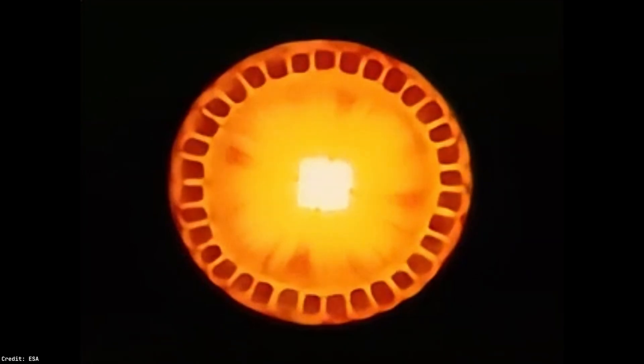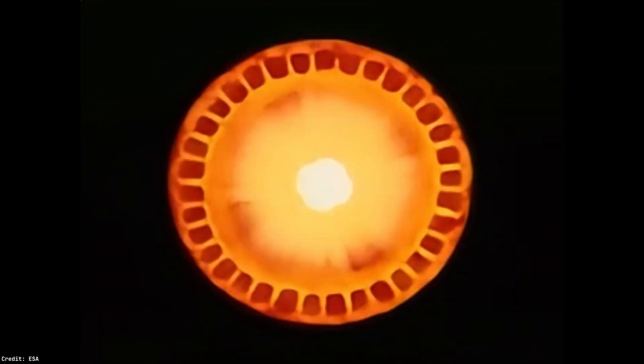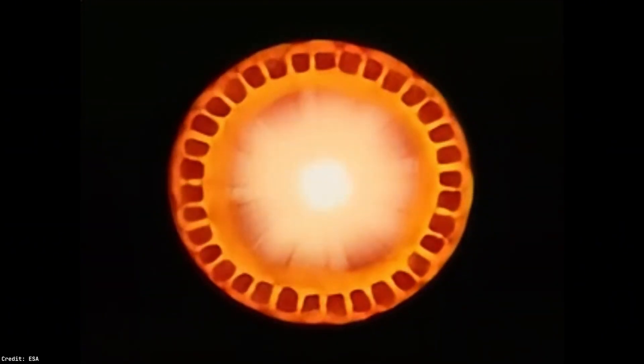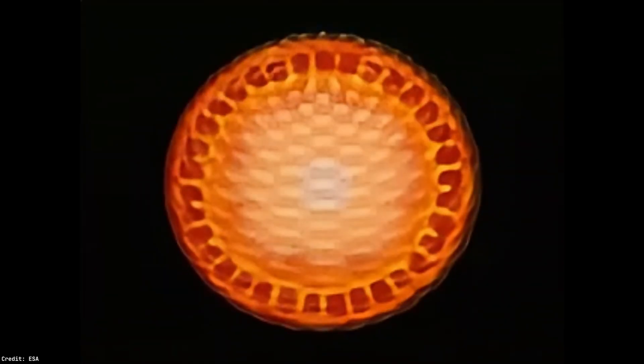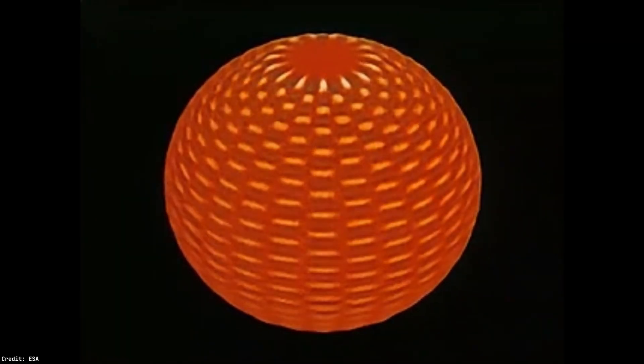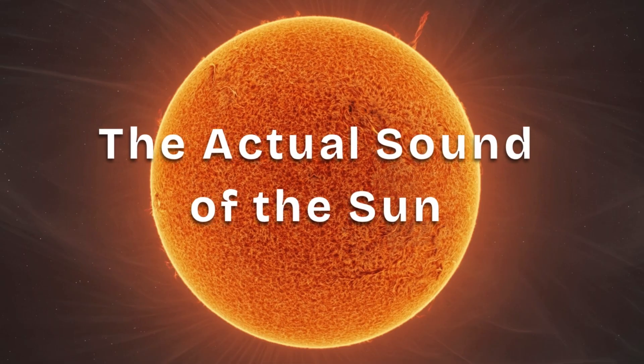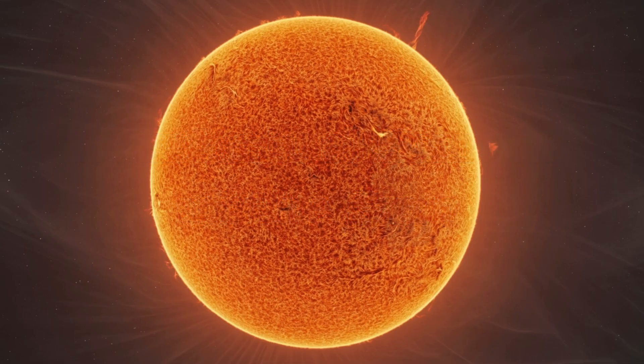By listening to the sun's surface vibrations, yes, actual waves rippling across it, scientists can uncover what's happening deep inside. It's like decoding a star's heartbeat. This technique, helioseismology, has pulled back the curtain on the sun's inner structure. Let's listen to what the sun actually sounds like as captured and released by NASA.